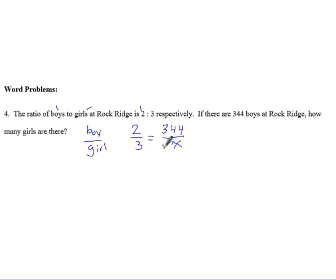So cross multiply and solve. 2 times x is 2x. 3 times 344, don't forget our equal sign, is 1,032. Divide both sides by 2, and we get that x is 516. So we would say that there are 516 girls.